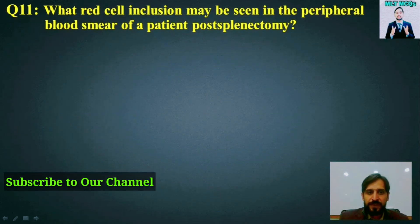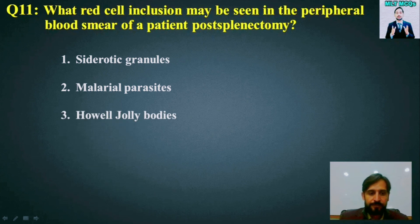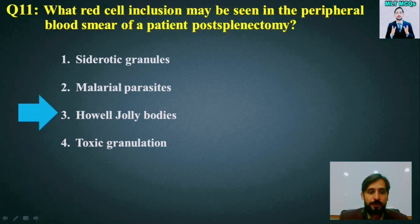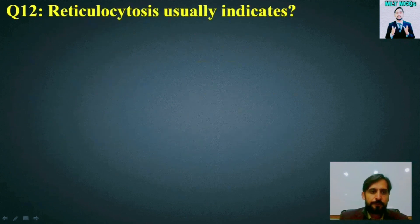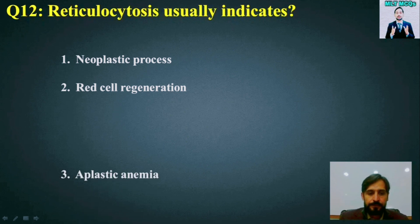MCQ number 11: What red cell inclusions may be seen in the peripheral blood smear of a patient post-splenectomy? Options are: sideroblastic granules, malarial parasites, Howell-Jolly bodies, or toxic granulation. The right answer is option number 3 — Howell-Jolly bodies.